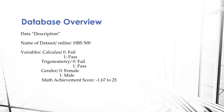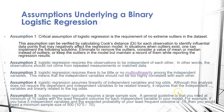Let's take a look at our dataset. The database is HBS 500 and we have four variables. We have calculus — whether a person passed or failed — that is our dependent variable. Then we have three independent or predictor variables: trigonometry pass or fail, gender male or female, and a continuous variable, math achievement score.